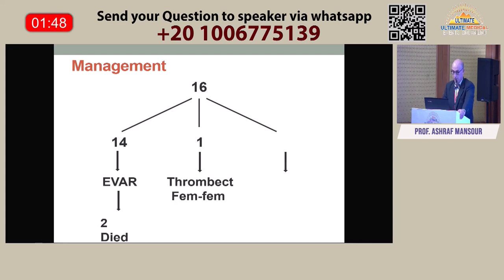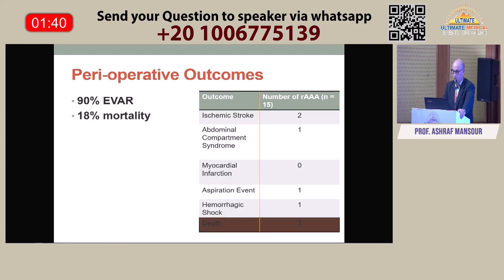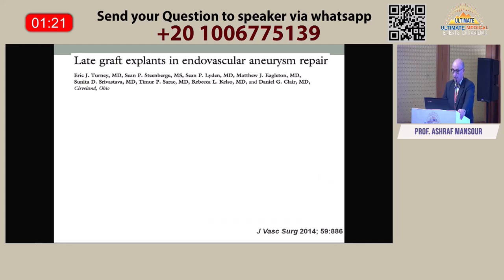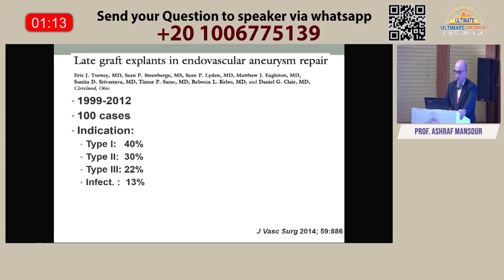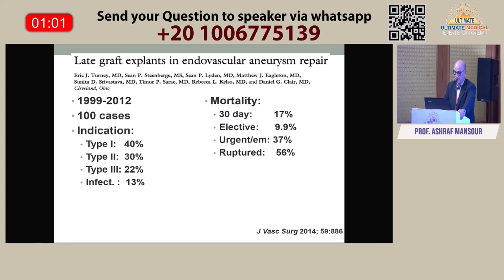In 14 patients we were able to perform redo EVAR, and two of those patients ended up dying in follow-up. In one patient we did a thrombectomy and femoral-femoral bypass, and one patient was allowed to die. Overall, 90% of patients had another endovascular repair, but the mortality from rupture after EVAR is not zero — approximately one in five patients will end up dying from a complication. In the large Cleveland Clinic series of over 100 cases, the 30-day mortality was 17%. Graft infection is another issue that will be discussed at this conference.